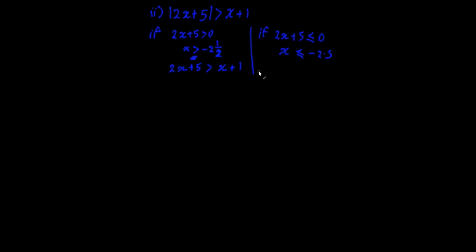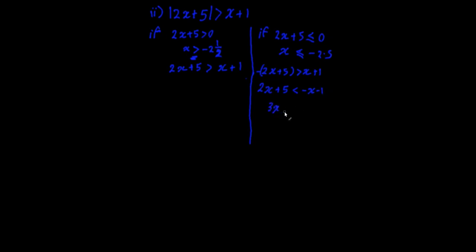Working on the negative case: minus (2x plus 5) is greater than x plus 1 means 2x plus 5 is less than minus x minus 1 — switching the sign. Bringing the x's onto one side gives 3x is less than minus 6, which means x is less than minus 2. So we have x is less than minus 2.